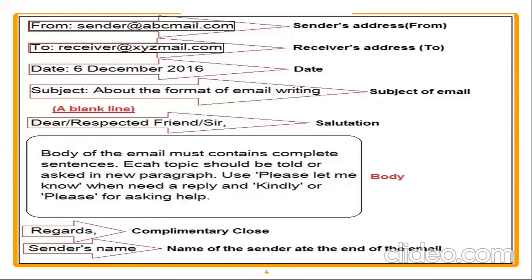The body of the email must contain complete sentences — don't write any phrases. Each topic should be told or asked in a new paragraph. If you want to say something extra or new information, begin with a new paragraph. Use phrases like 'please let me know' when there is a need for any reply. If you are asking for any work to be done, say 'kindly do it' or 'please' — use very polite expressions. Then close your email with expressions like 'regards' or 'best regards' — this is called the complimentary close. Finally, your name and your designation have to be mentioned. If there is any attachment, you can attach any document.